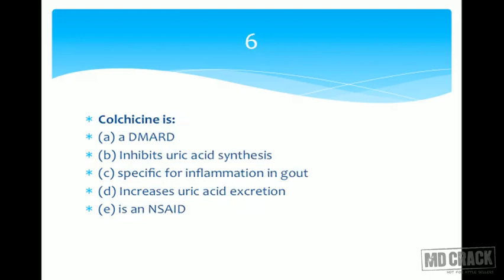Question number six: colchicine is — A a DMARD, B inhibits uric acid synthesis, C specific for inflammation in gout, D increases uric acid excretion, or E an NSAID. Colchicine is used in gout. Option A says it is a DMARD — a disease-modifying anti-rheumatic drug — meaning it would be useful in rheumatoid arthritis, but colchicine is used in gout, so option A is out.